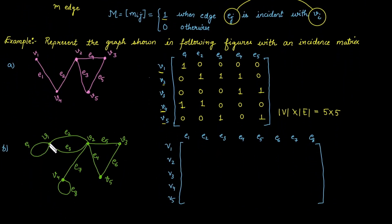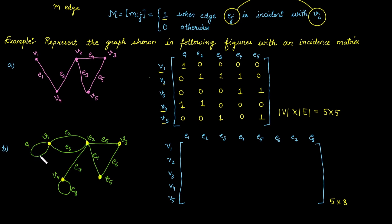In graph B, it is not a simple graph — it consists of multiple edges and loops. The procedure is the same: just name the edges and the vertices. Count the total number of vertices: 1, 2, 3, 4, 5, 6, 7, and 8, so the total number of columns is 8. Take the first edge E1. E1 starts and ends at vertex 1, so only the first row entry is 1 and the rest are 0.